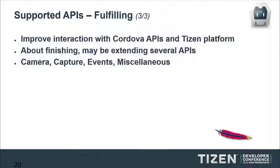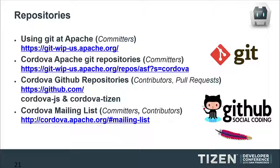The last phase I call fulfilling. It will improve Cordova's interaction with the Tizen platform itself. We have to finish partially implemented APIs: camera, capture, events, and miscellaneous. Events are about managing hard keys on a device. Miscellaneous covers things like dialing a number or sending SMS. On Tizen, we should be able to use native services provided by native applications through the application control Tizen web API.